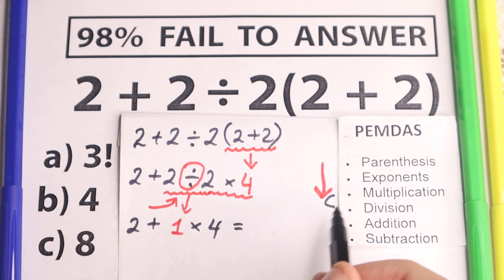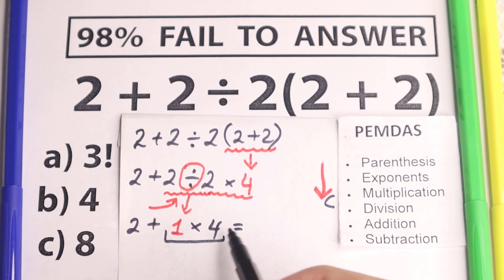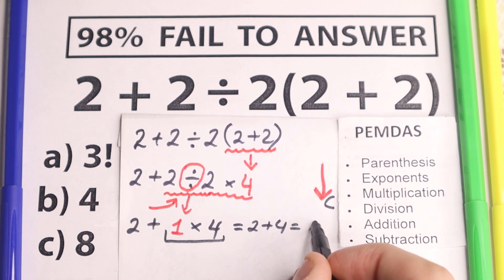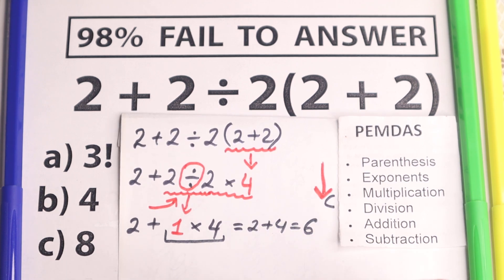Ok, let's solve this. Right now we have addition and multiplication. We need to do multiplication before addition. So let's multiply 1 × 4 = 4. So 2 + 4 = 6. This is our answer.